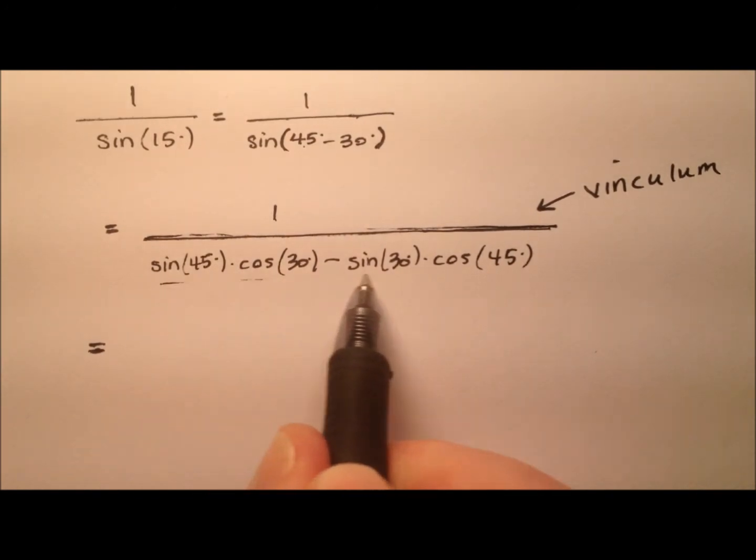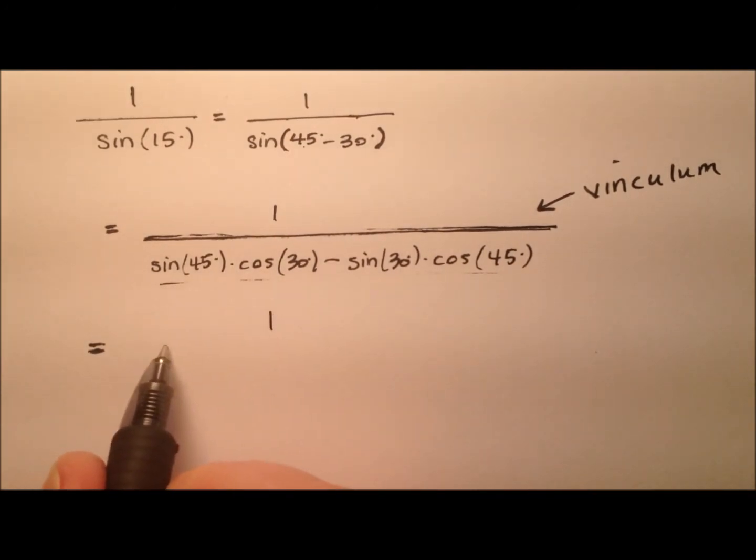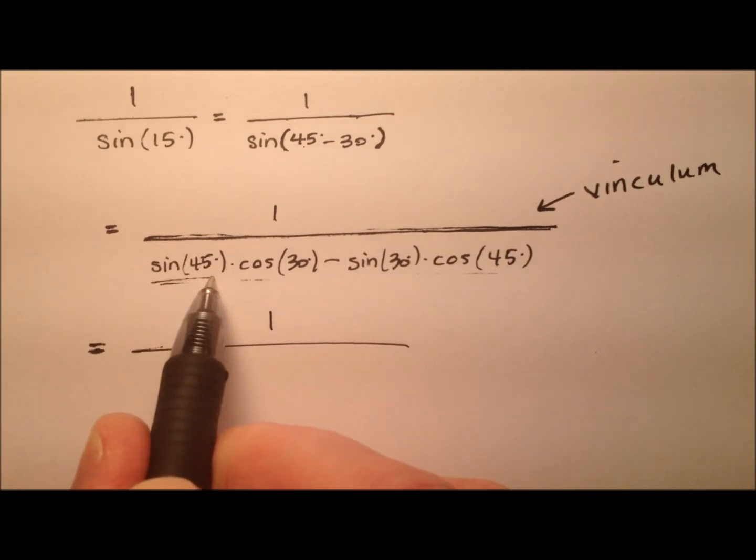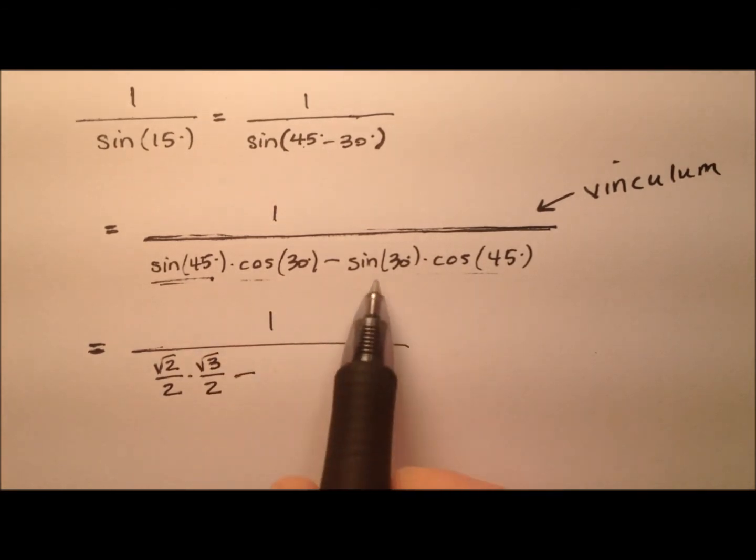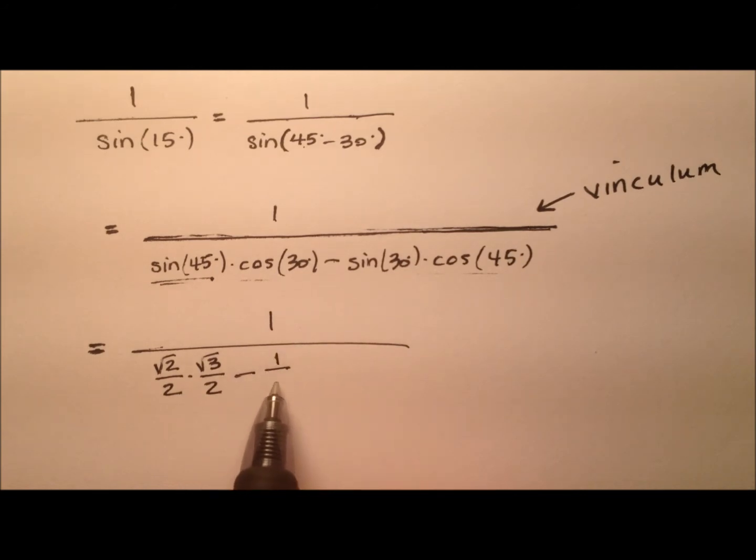Let's go ahead and plug these values in. We have 1 all over... The sine of 45 degrees is √2/2. Cosine of 30 degrees is √3/2 minus... The sine of 30 is 1/2. And the cosine of 45 is √2/2.